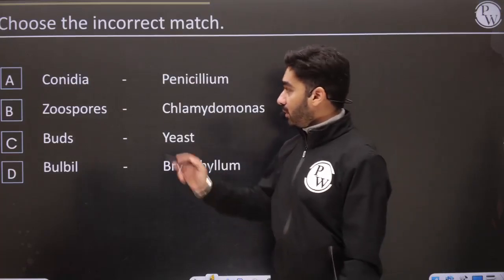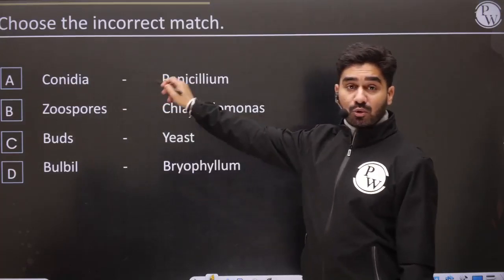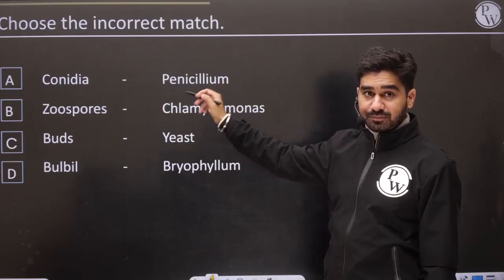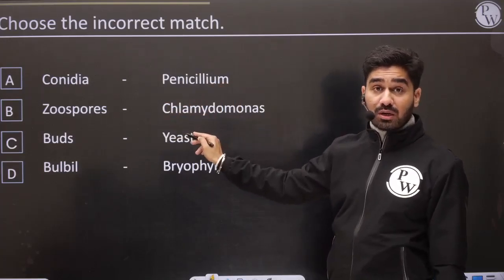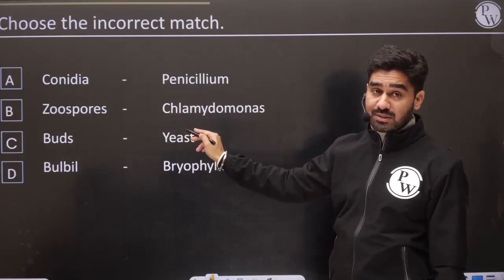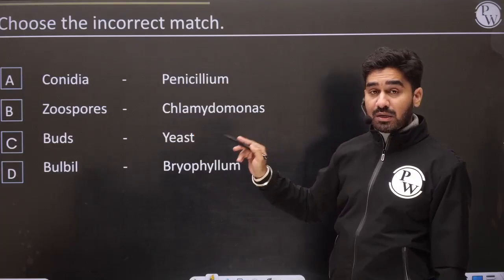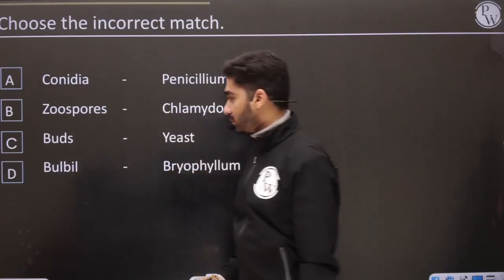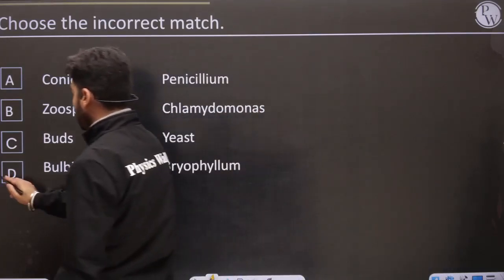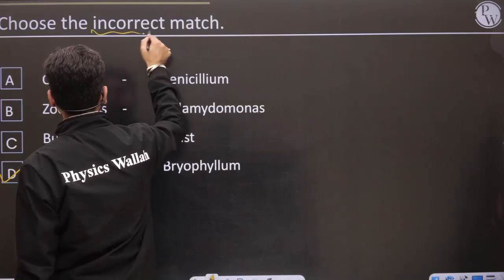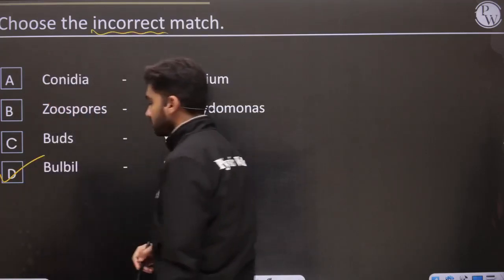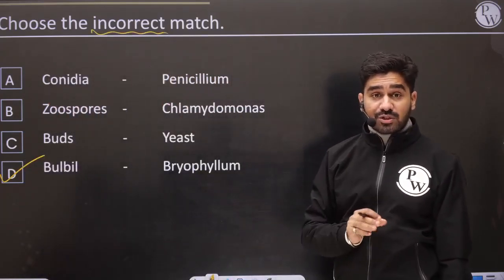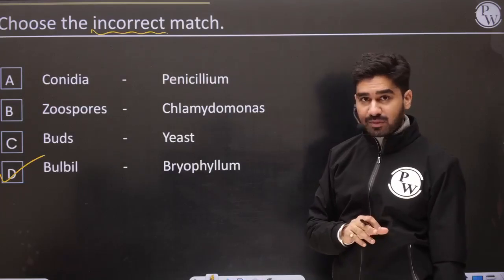Next: choose the incorrect match. Penicillin-Penicillium — correct. Zoospore-Chlamydomonas — correct. Bud in yeast — correct. Bulbil and Bryophyllum — incorrect. We had to find the incorrect match. Bulbil is a feature of Agave, not Bryophyllum. Bryophyllum has leaf buds.